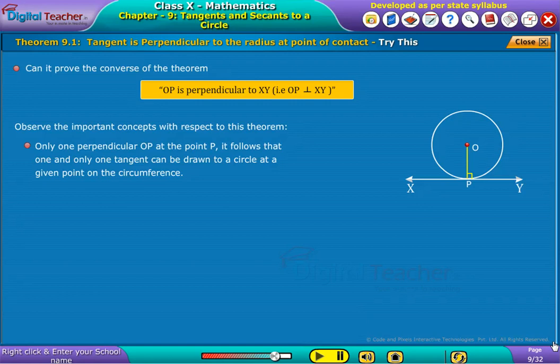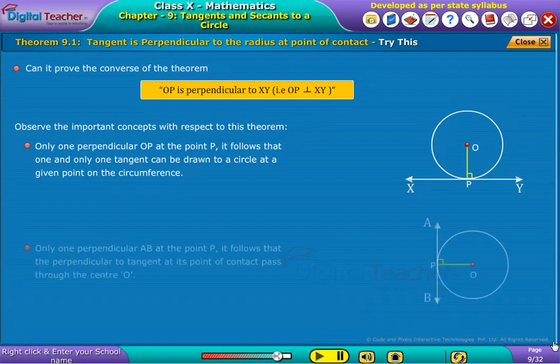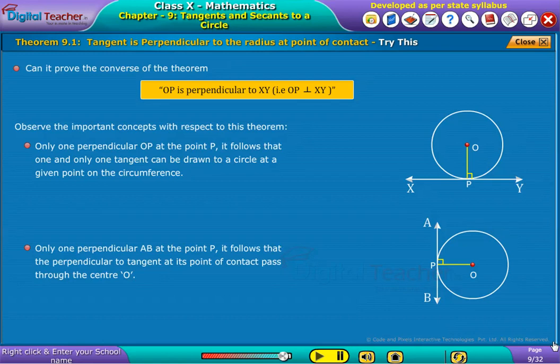Only one perpendicular AB at the point P. It follows that the perpendicular to tangent at its point of contact passes through the center.